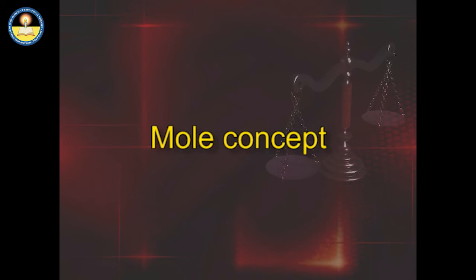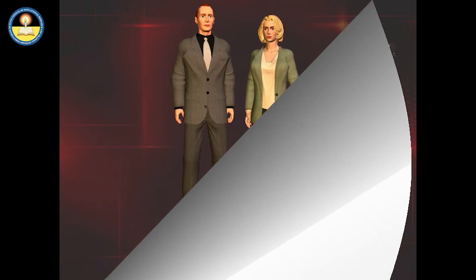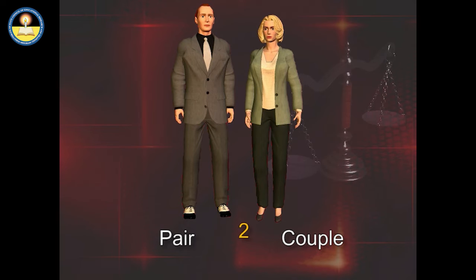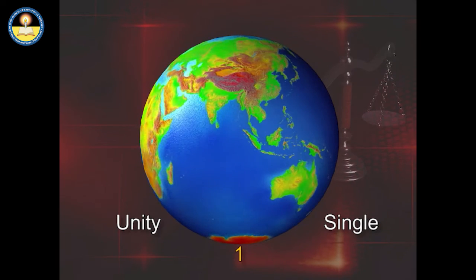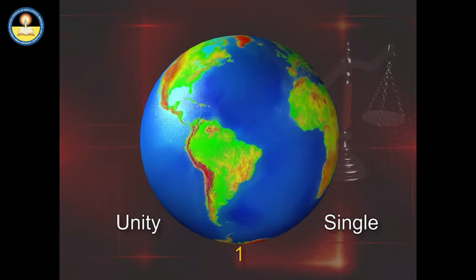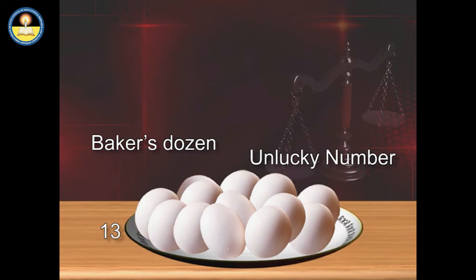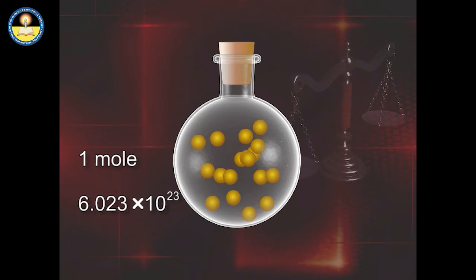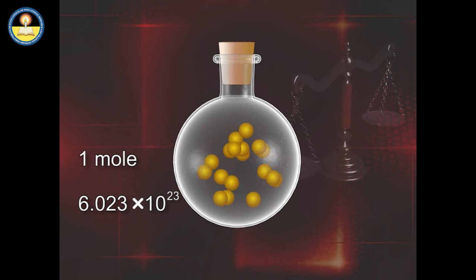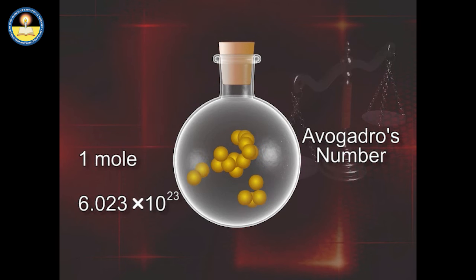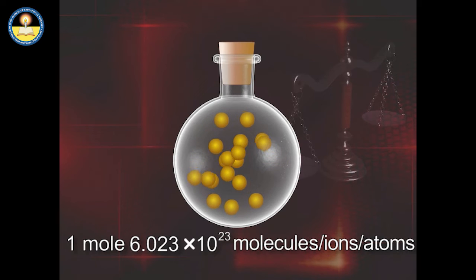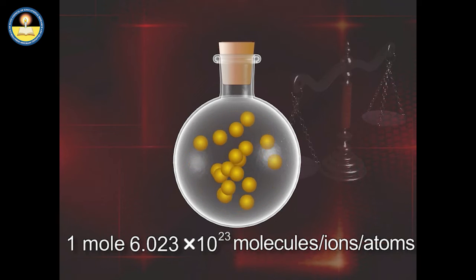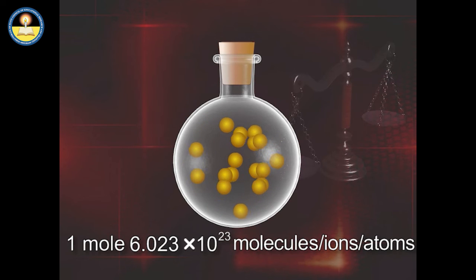Let us understand the mole concept with the help of an analogy. A pair is represented by 2, also called a couple. Unity is represented by 1, a single unit. A baker's dozen is represented by 13, also called the unlucky number. Similarly, one mole is represented by 6.023 × 10²³, also known as Avogadro's number. One mole represents 6.023 × 10²³ molecules, ions, or atoms.